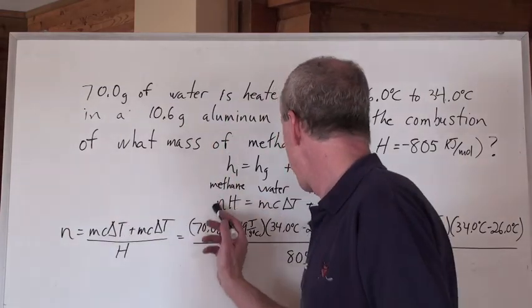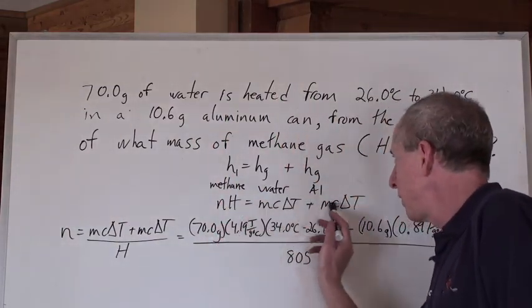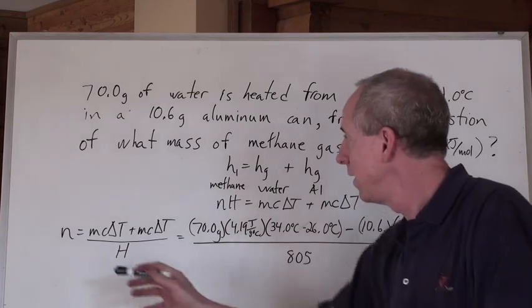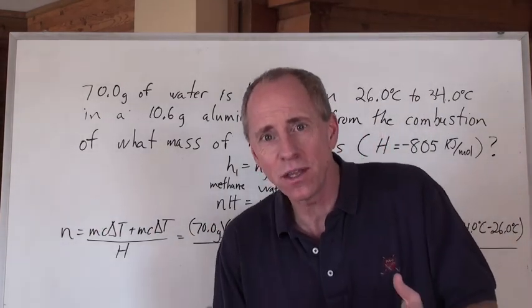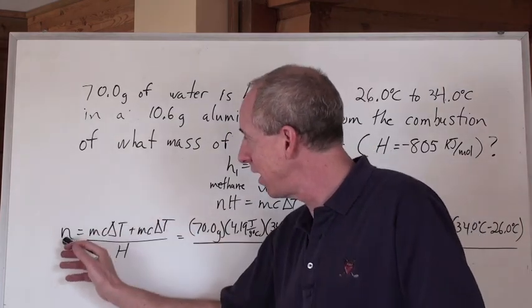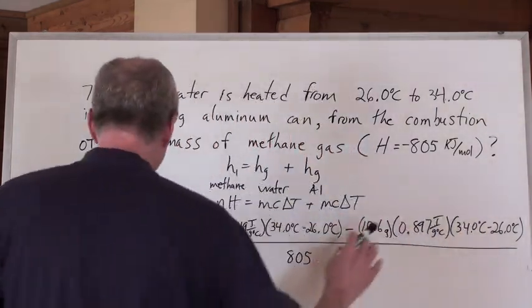Take the formula nh equals mc delta t plus mc delta t, we rearrange it to solve for n. Why do we want the number of moles of methane? Because we want to find its mass, and in this formula, that's the unknown. Everything else is known here.